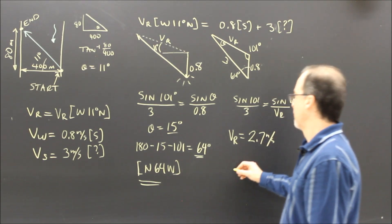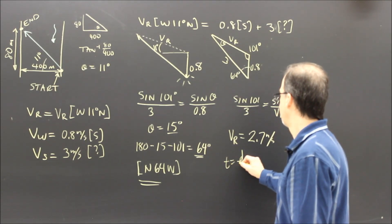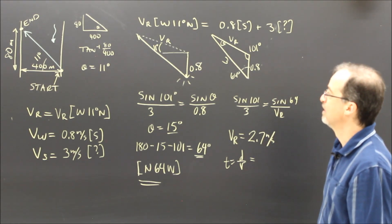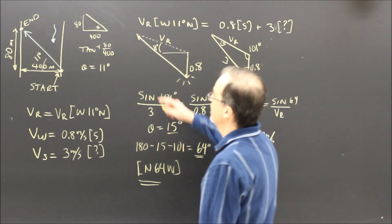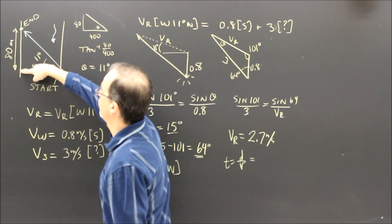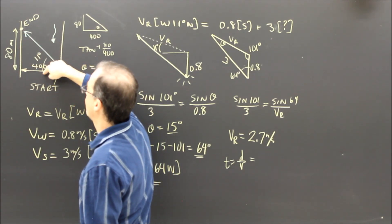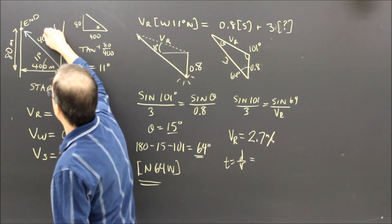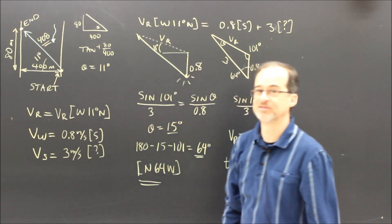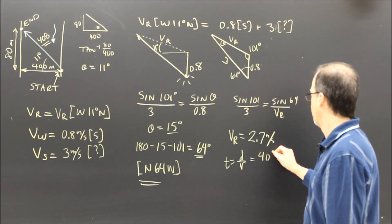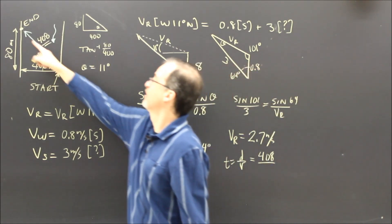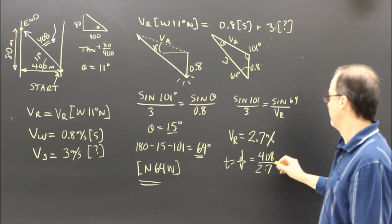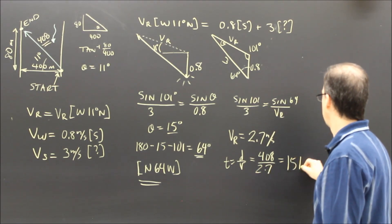To find the time of the trip it's distance over velocity. The distance is the straight-line path from start to finish — 400 meters across and 80 meters along — so I take the square root of 400 squared plus 80 squared, which gives 408 meters. Dividing 408 by 2.7, the trip takes 151 seconds.